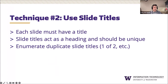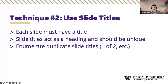Technique number two: use slide titles. For digital presentations, slide titles are critical for accessibility. They serve as a means for providing structure, navigation, and context of the content — which is another reason not to choose a blank slide, as those navigation features will be stripped away. Each and every slide must have a slide title; if a slide title is absent, it will appear in your accessibility report as an error. Each slide title should also be unique, since screen readers use slide titles to navigate.